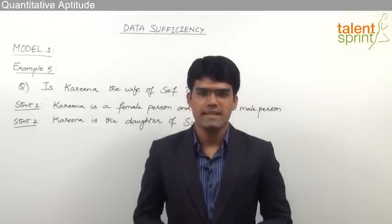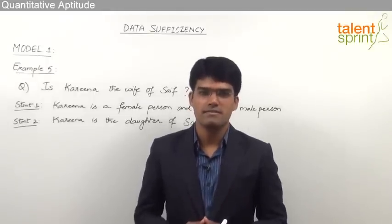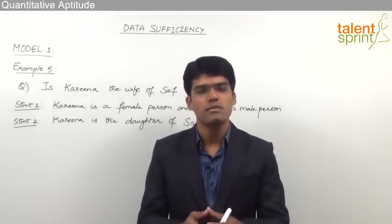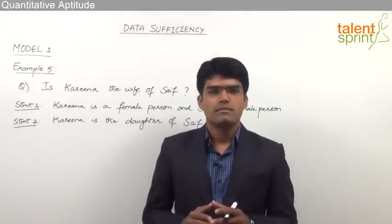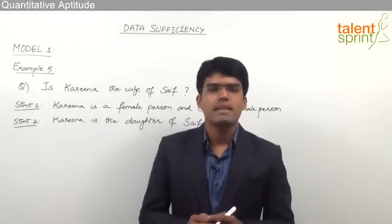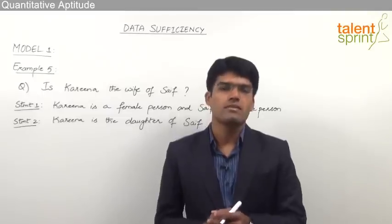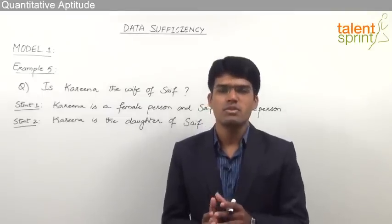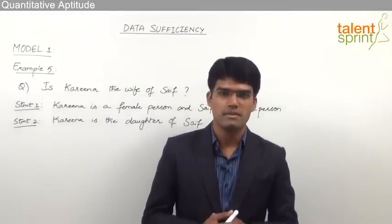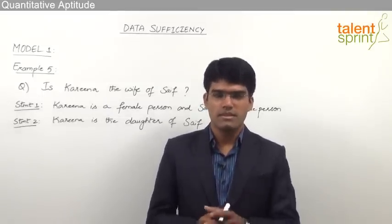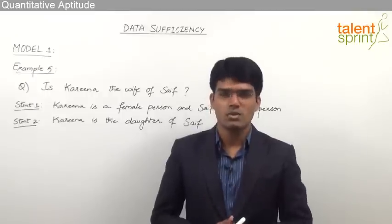Let us now take the fifth example from model 1 of data sufficiency where we are going to discuss a question based on blood relations. This example is important because generally most of the students go wrong in these type of data sufficiency questions. So let's see what is the question here and how to solve that.